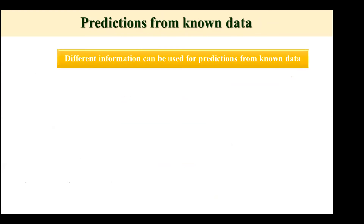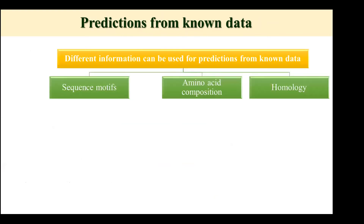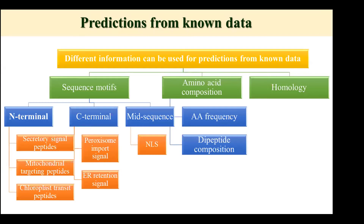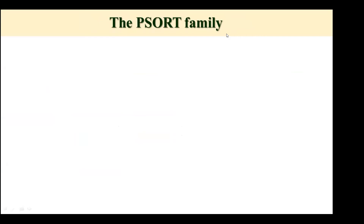Predictions from known data can use sequence motifs, amino acid composition, and homology. In sequence motifs, the N-terminal, C-terminal, and mid-sequence each play roles. The N-terminal is especially important — it is involved in secretory signal peptides, mitochondrial targeting peptides, and chloroplast transit peptides. To study them in more depth, there is a concept of PSortII families.